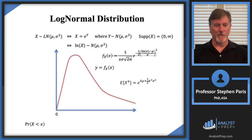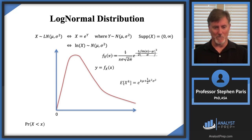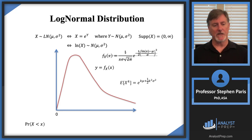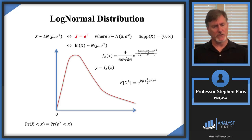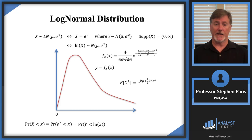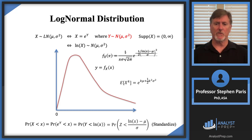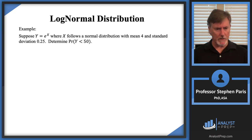For probability questions with a log-normal distribution, you want the probability that X is less than some value. Use the relation X = e^Y: plug in e^Y for X, take the ln of both sides, and get the probability that Y < ln(x). Since Y follows a normal distribution, go through the process of standardizing that normal distribution and follow the same steps as before.